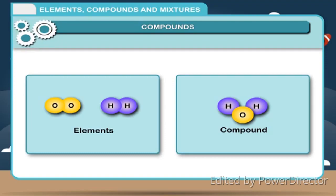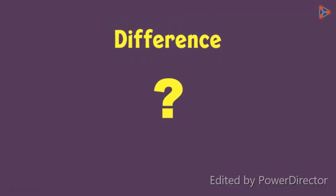Elements are of two types. They are metals and non-metals. How do you differentiate between metals and non-metals?